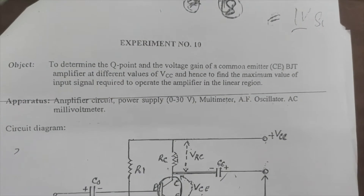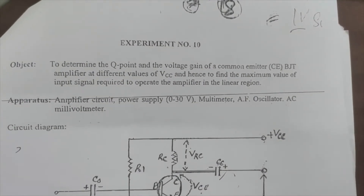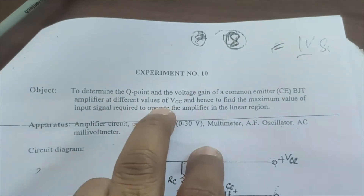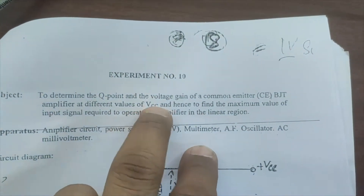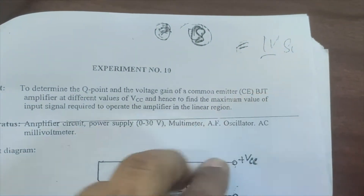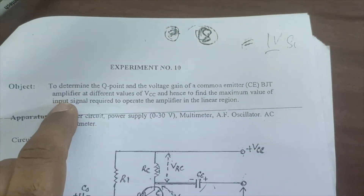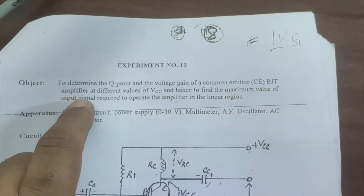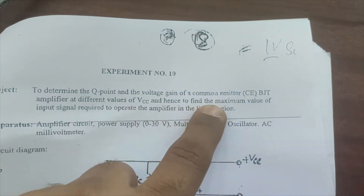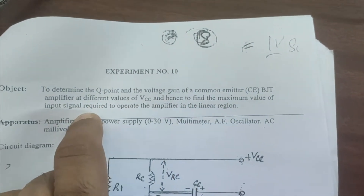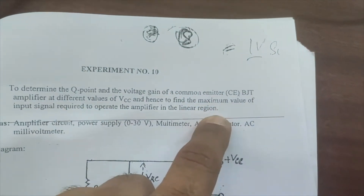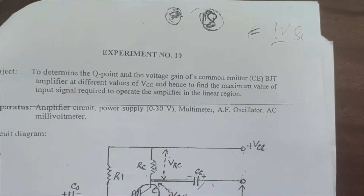In this experiment, we are going to determine the Q-point and the voltage gain of a common emitter bipolar junction transistor amplifier circuit for different values of VCC, and hence find the maximum value of the input signal required to operate the amplifier in the linear region.